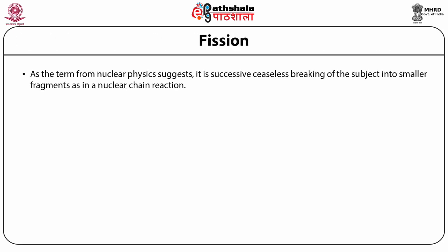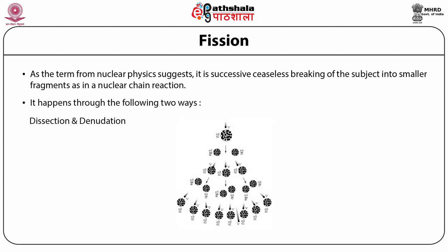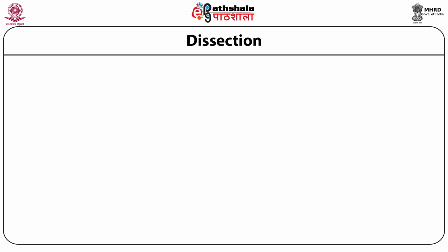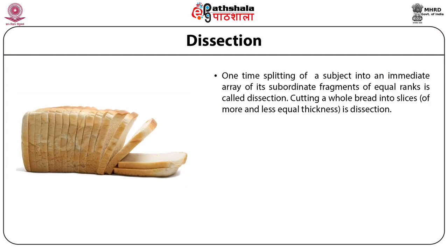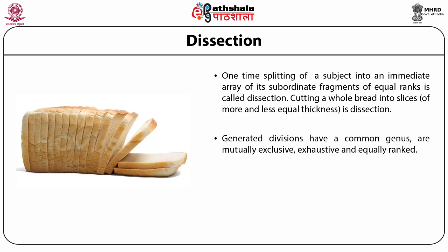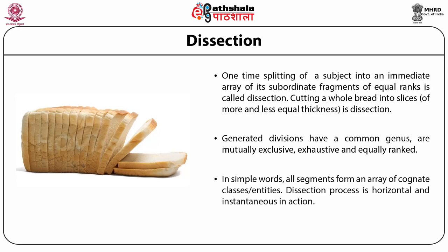Fission: The term from nuclear physics refers to the successive, ceaseless breaking of a subject into smaller and smaller fragments, as in a nuclear chain reaction. At every level the fission proliferates 2, 4, 8 and so on in geometric progression. Dissection is a mode of specialization — a one-time splitting of a subject into an immediate area of its subordinate fragments of equal rank. Cutting a whole bread into slices of more or less equal rank is dissection. Generated divisions have a common genus, are mutually exclusive, exhaustive and equally ranked.